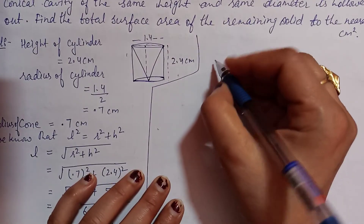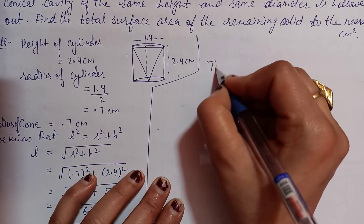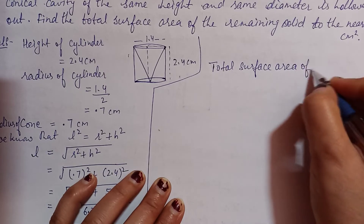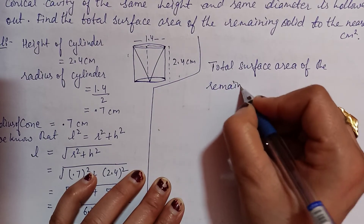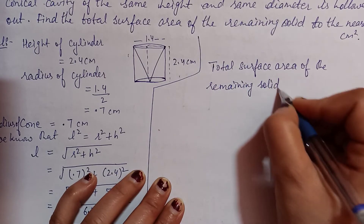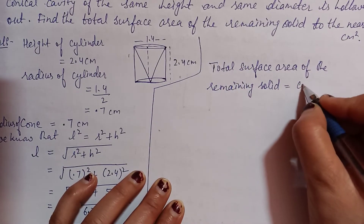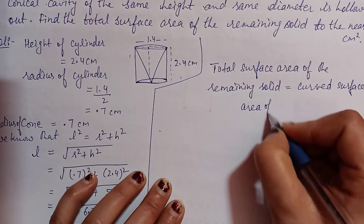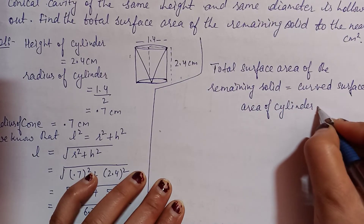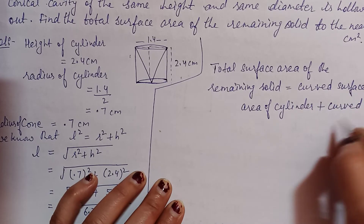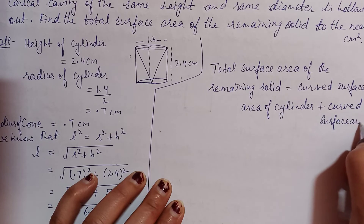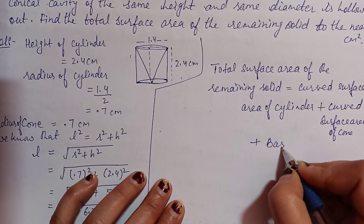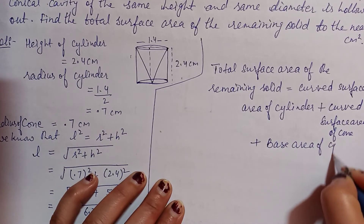Next, write: total surface area of the remaining solid = curved surface area of cylinder + curved surface area of cone + base area of cylinder. The base area of a cylinder is a circle.